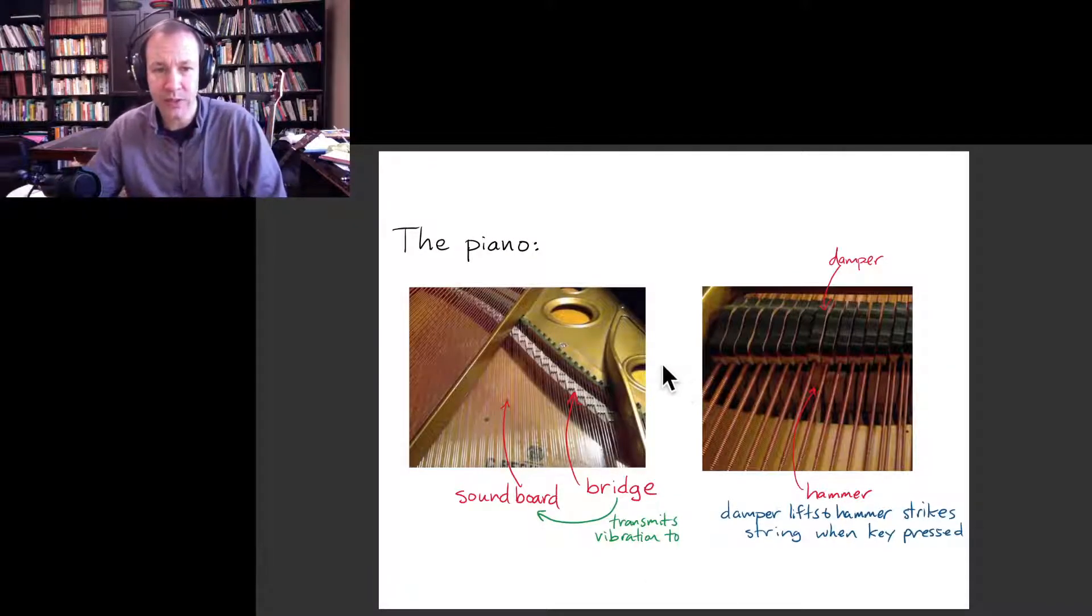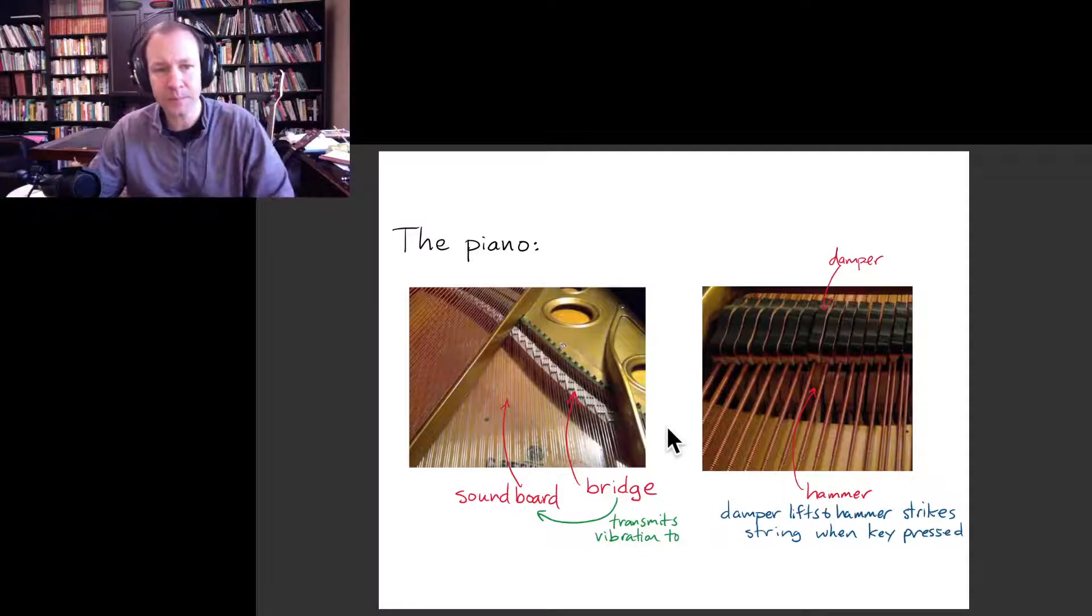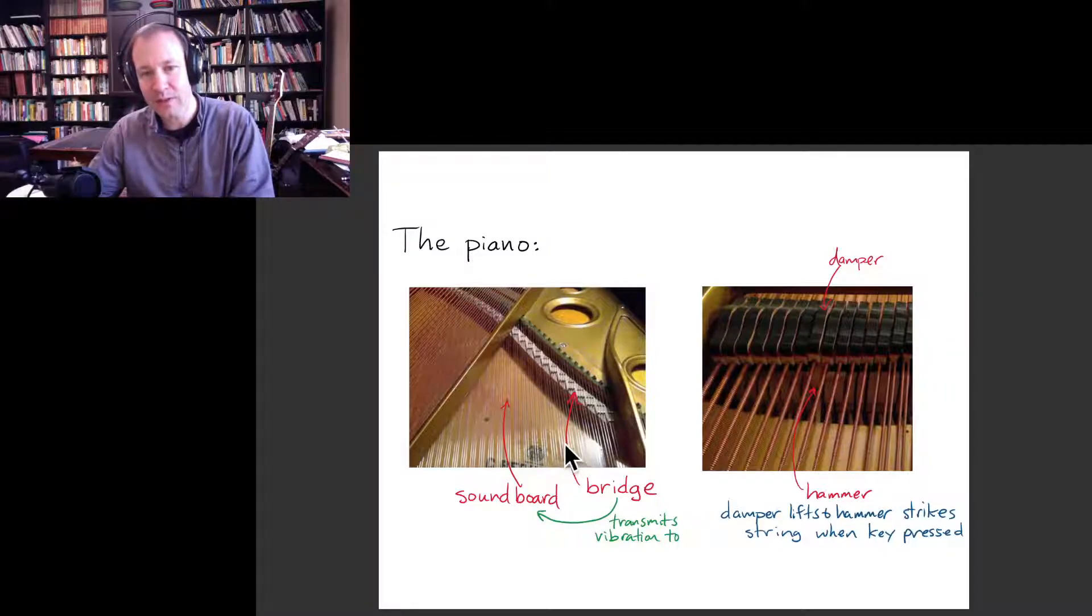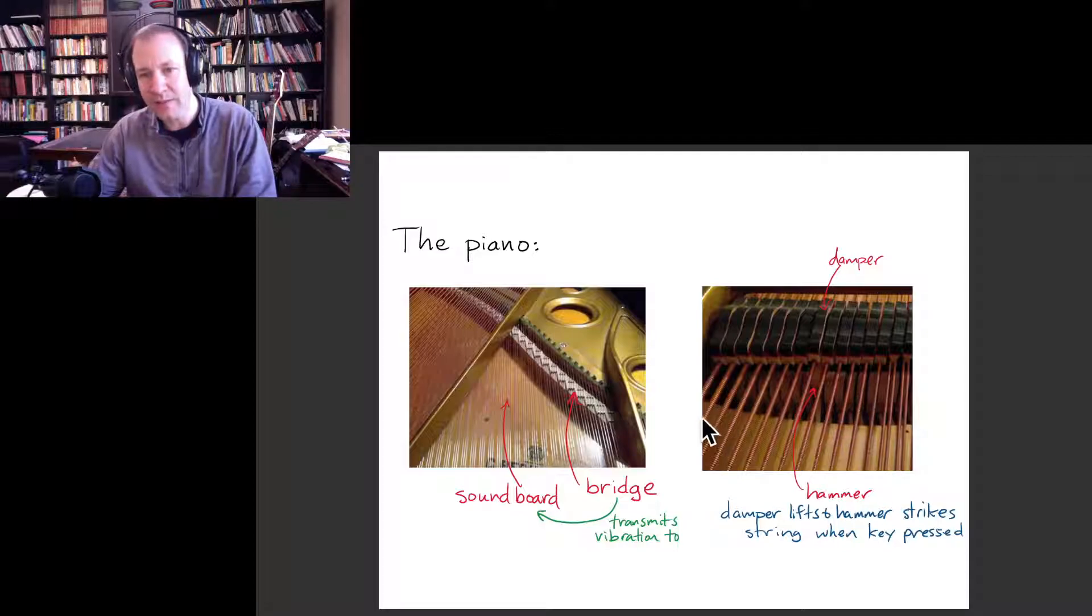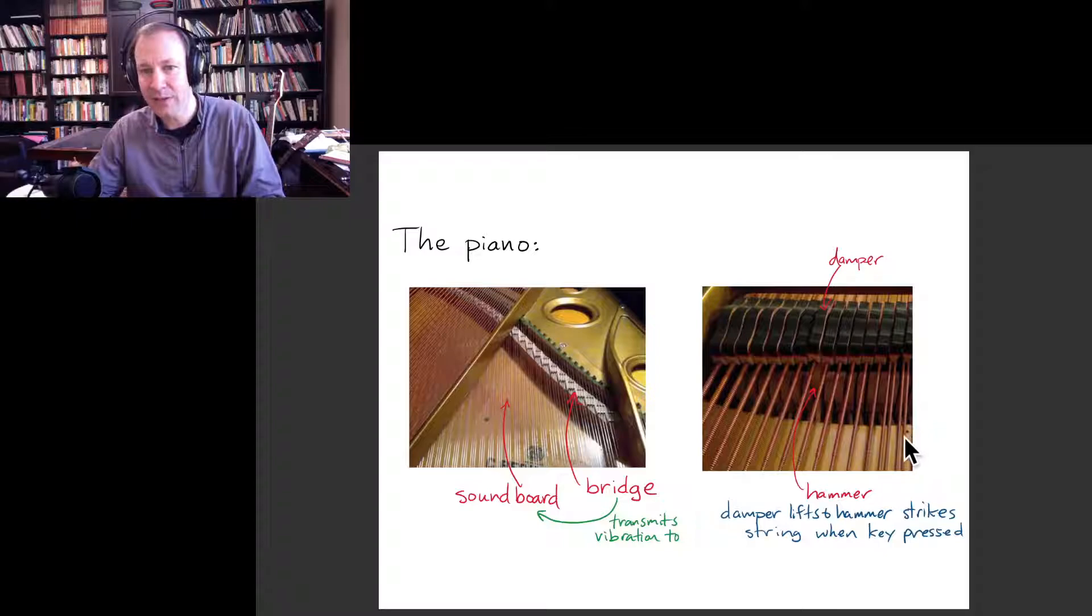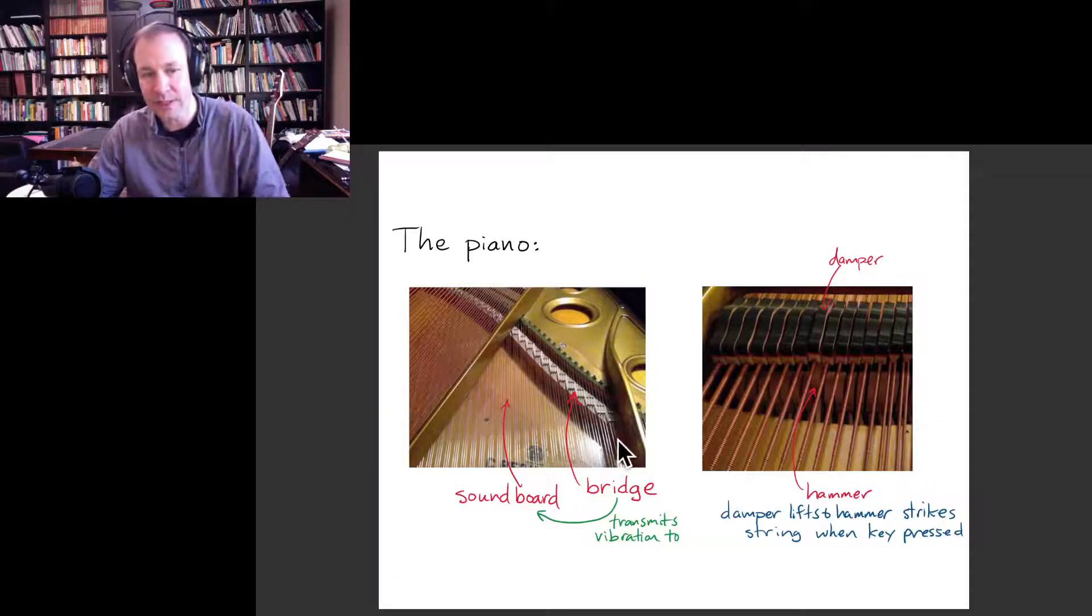And so just to show you inside of a piano. So similar to that dulcimer you have, at least at the high end, you have several strings for each note that you're going to play on the piano. So for each key, you have several strings up high, down low, you have only one string for the lowest few notes, lowest octave. And then there's two strings and then higher up, there's three strings per note.